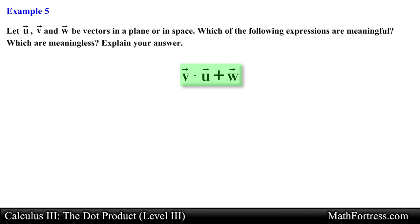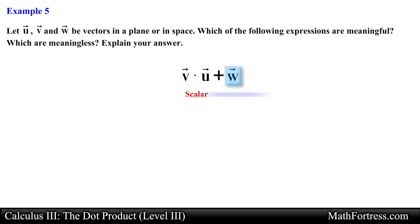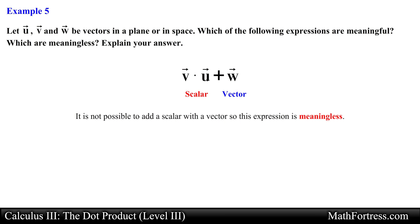Up next is vector v dot u plus vector w. The first operation, v dot u, reduces to a scalar which will then be added to vector w. It is not possible to add a scalar with a vector, so this expression is meaningless.